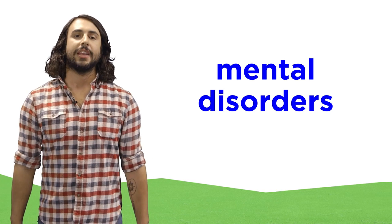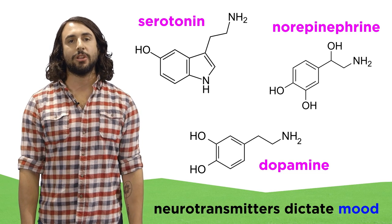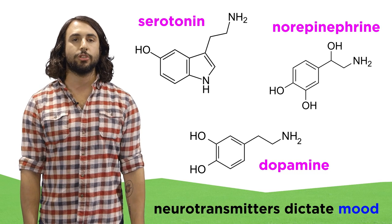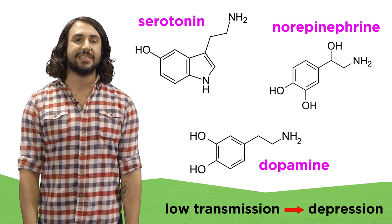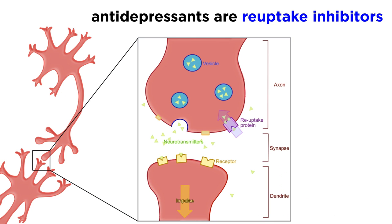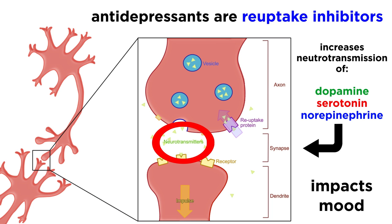Another application for inhibitors can be found in the domain of mental health. We learned about neurotransmitters, and it is the case that molecules like serotonin, dopamine, and norepinephrine will dictate your mood by transmitting signals through the synaptic cleft. If these neurotransmitters exist in insufficient concentrations, it can lead to depression. One solution to this problem is to use a reuptake inhibitor, a molecule that blocks the receptors that reabsorb some of the neurotransmitter molecules, which results in a greater concentration of neurotransmitters in the synaptic space, and therefore more effective transmission.